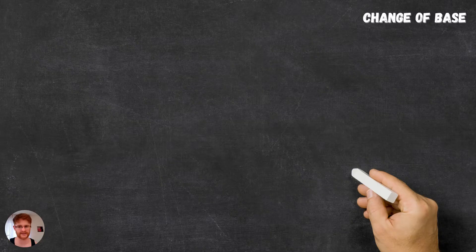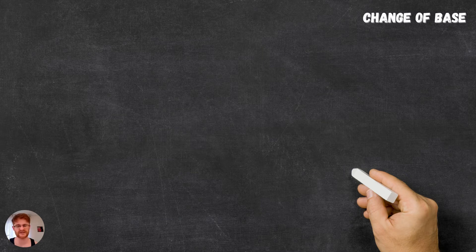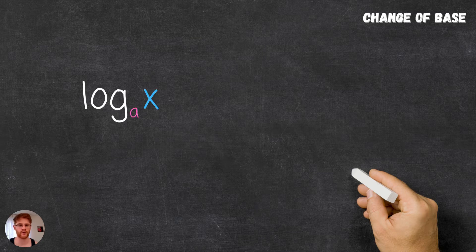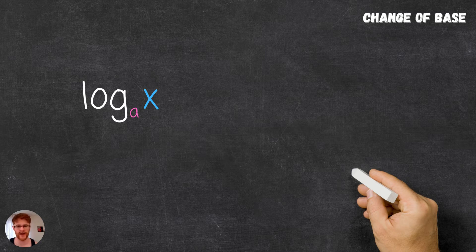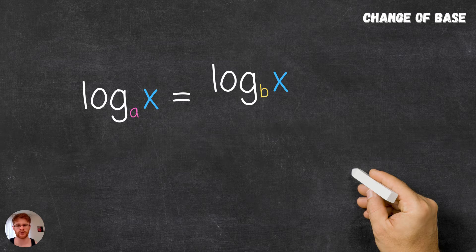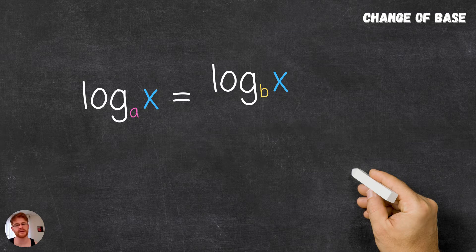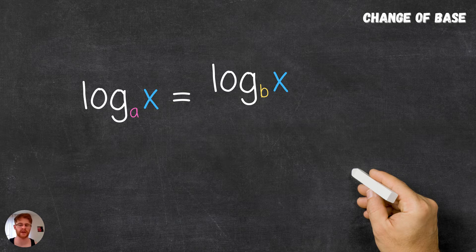Now let's express this as a general relation that we can apply for any case. For any log of base a and exponential x, this is equal to the log of base b and exponential x, where b is any arbitrary base of your choosing and x is the number of which we are taking the log or the exponential, over log base b of a, where a is the base from which we are changing.